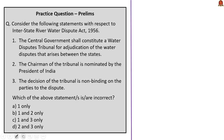This question is with respect to the Interstate River Water Dispute Act of 1956. Three statements are given, asking which are INCORRECT. The first statement: the central government shall constitute a water dispute tribunal for adjudication of water disputes that arise between states. This is correct, based on Section 4 of the Act — when a state government's request is received and the central government believes a dispute cannot be settled by negotiations, it shall constitute a tribunal.